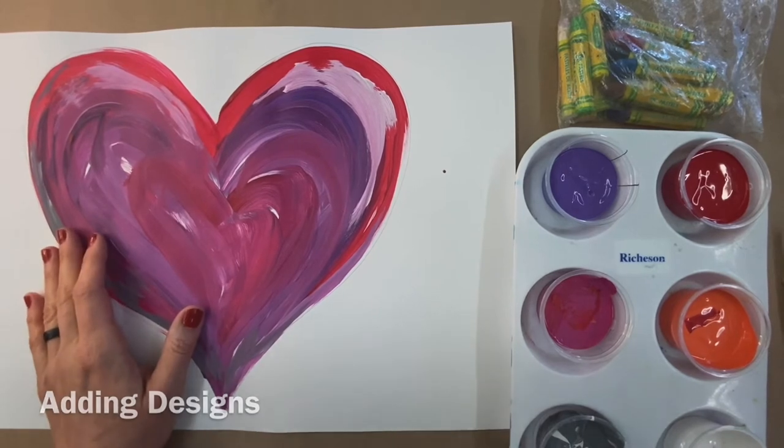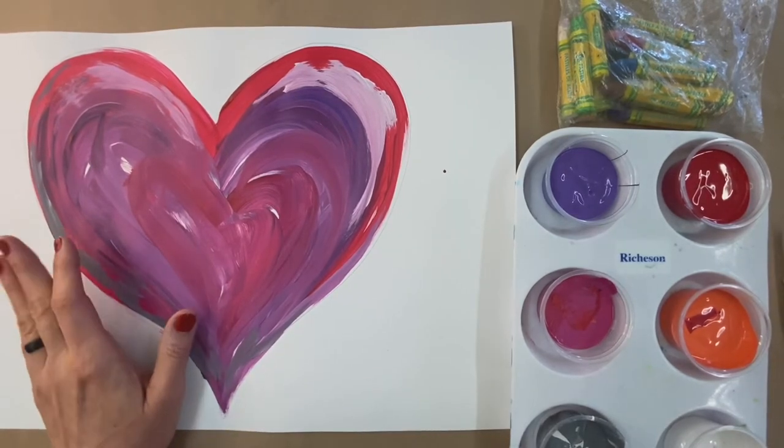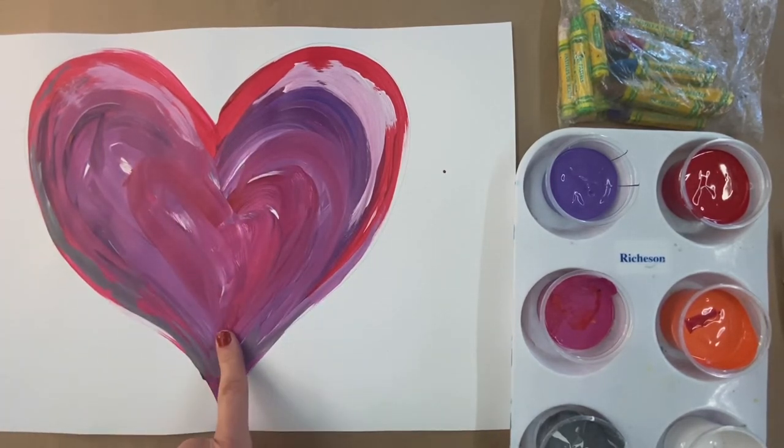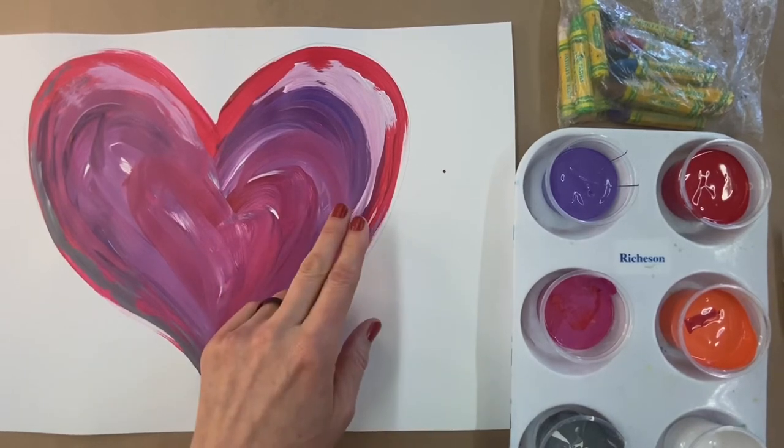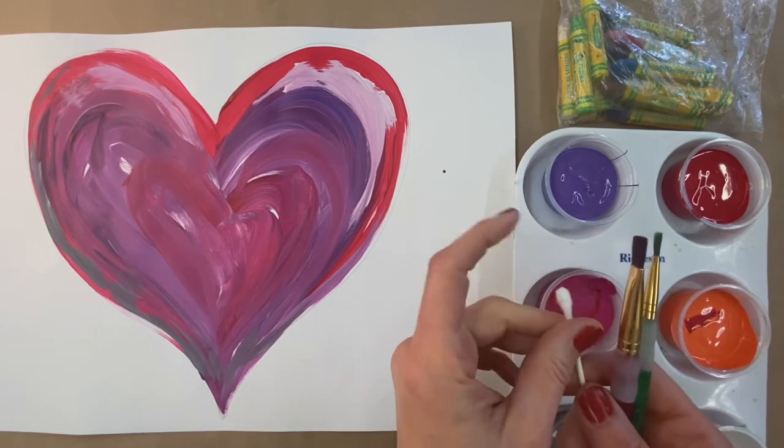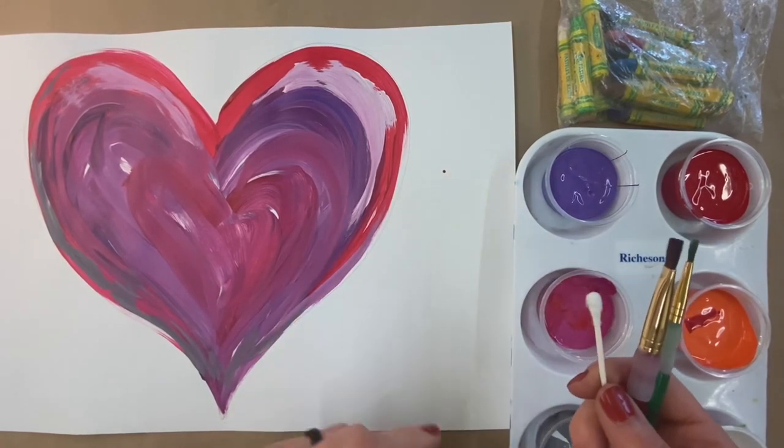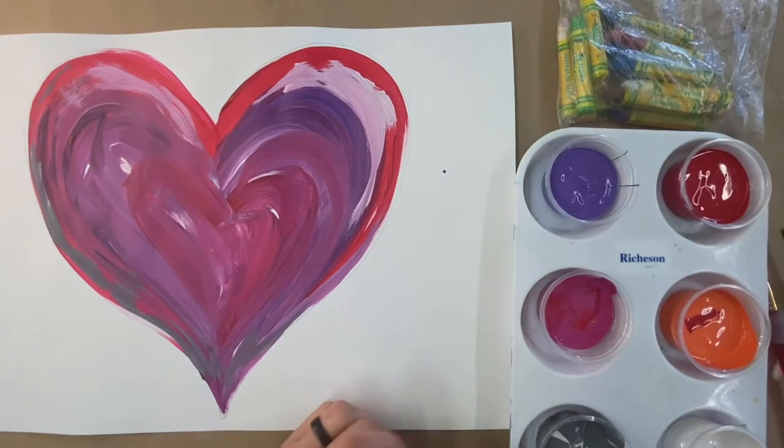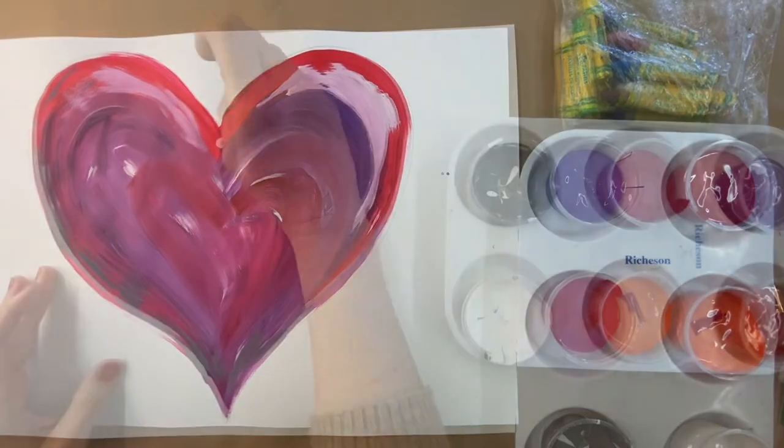The next step in our heart with wings project is choosing if you'd like to add some designs onto the surface of the heart. I think these look particularly cool if you use a contrasting color. I have a variety of brushes available, q-tips available because they make awesome little polka dots. You could also use oil pastels at home. Here's what my process looks like.